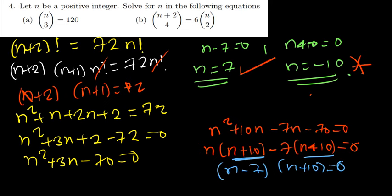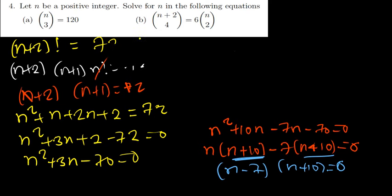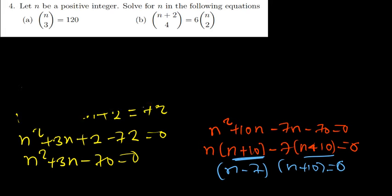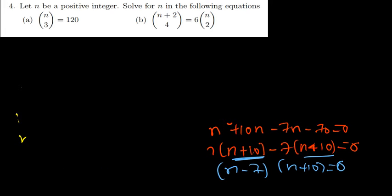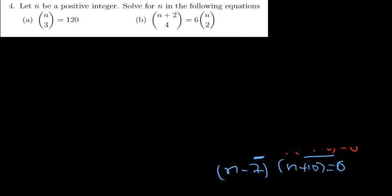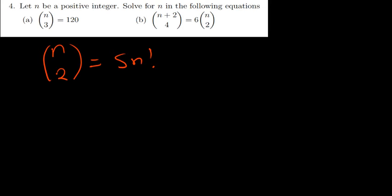So that is it for question 4. Now I'm going to give you a practice question which I would like you guys to solve. Let n be a positive integer, then we have n choose 2 equal to 5n. Find the value of n. Go ahead and find the answers — you can put them in the comment section and I'll be able to see them.